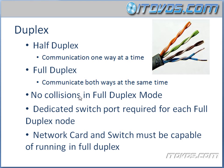Because there are no collisions, we have to have a point-to-point connection to run full duplex mode — like a host to a switch port, a switch to a switch, a host to a router, or even a host to a host. As long as you don't have a hub involved, you can run in full duplex mode. If we have hubs, we're going to be running at half duplex. A dedicated switch port is required for each full duplex node, and the network card and switch must be capable of running full duplex. That's normally the case nowadays — you're going to be hard-pressed to find one that can't.